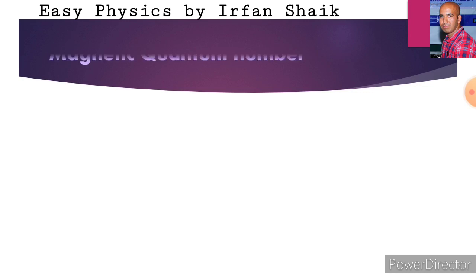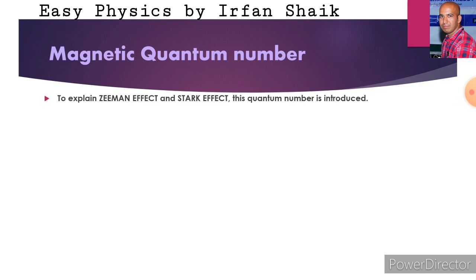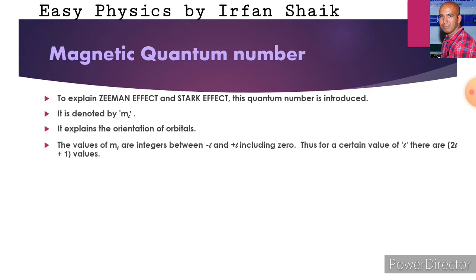Now we move to another quantum number, that is magnetic quantum number. In the previous class, we discussed the Zeeman effect and Stark effect. To explain these effects, we need to know about the magnetic quantum number. It is denoted by ml. It explains the orientation of orbitals, that means the arrangement of orbitals in an orbit. The values of ml are integers between minus l and plus l, including 0. Thus, for a certain value of l, there are 2l plus 1 values.